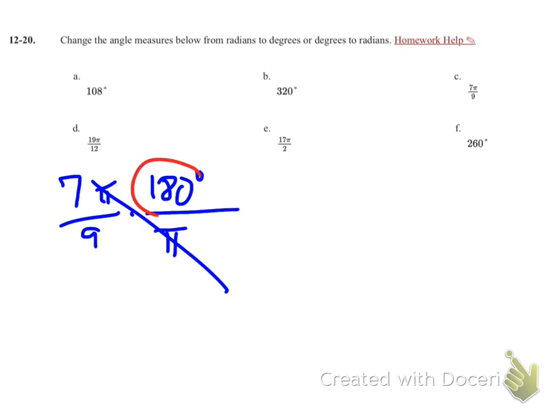I also can reduce 180 and 9. So I can divide that. That becomes a 1. This becomes a 20. So now I have 7 times 20. And that gives me 140. And I still have the degree symbol. So it's 140 degrees.